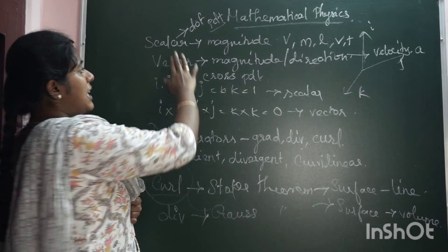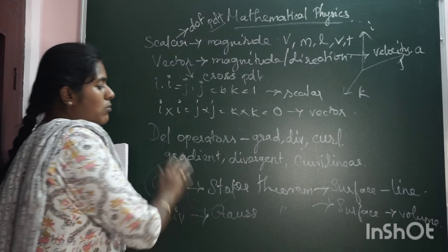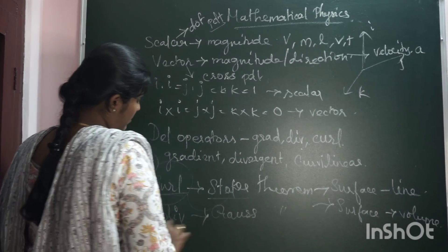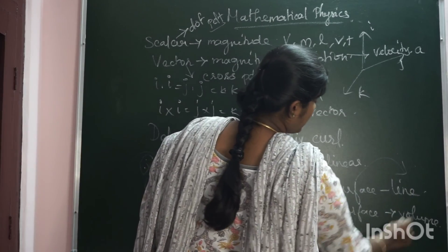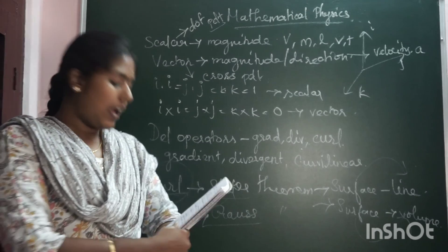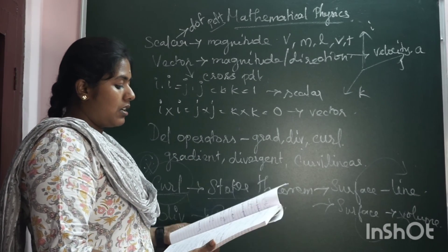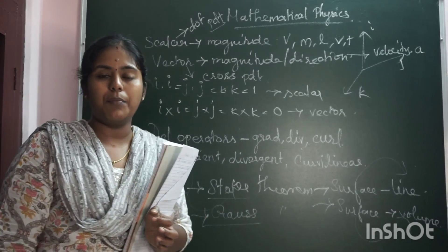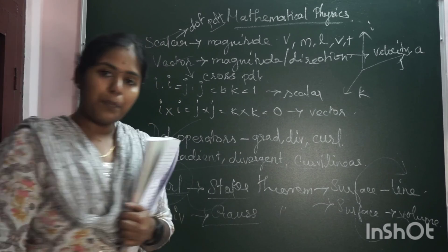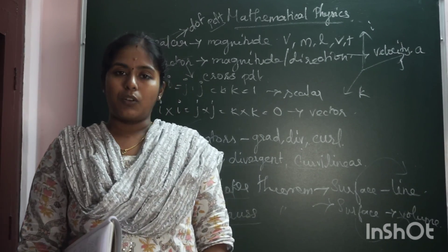So in mathematical physics, we can see scalar, vector, dot product, cross product, and operators. The important question is: curl operator uses the Stokes theorem, divergence uses the Gauss theorem — converting surface to line integral, and surface to volume integral. First scalar and vector, then operators and their properties. If you have doubts, let me know in the comments section. Thank you so much for watching.